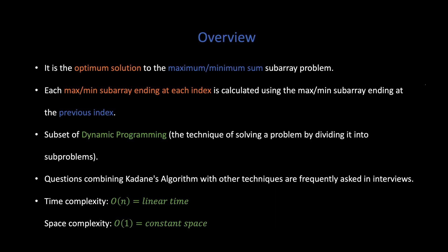Kadane's algorithm uses optimal substructure to solve the max-min subarray sum problem. Each max-min subarray ending at each index is calculated using the max-min subarray ending at the previous index. You can say this is an accumulation function with some edit rules, making it one of my favorite examples of dynamic programming. In the video, I'll explain how Kadane's algorithm is an optimal substructure problem using a basic animation.